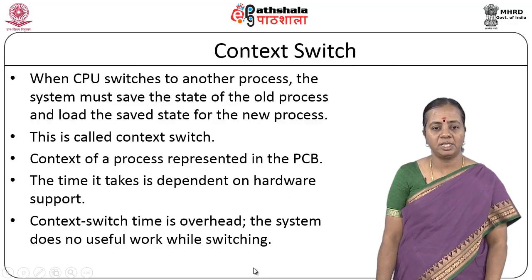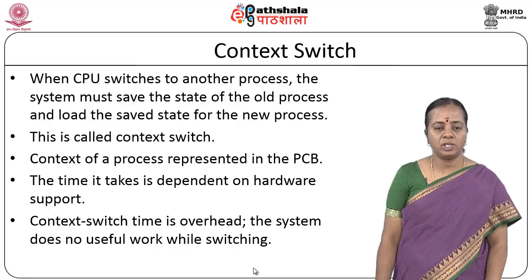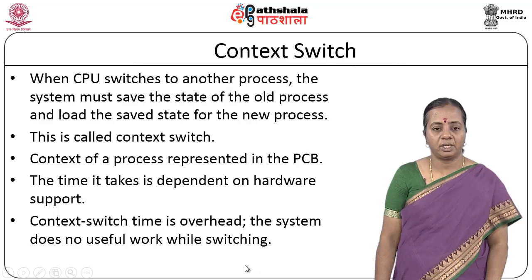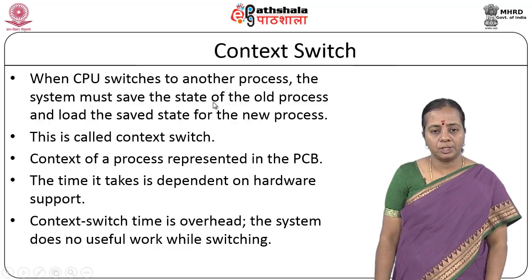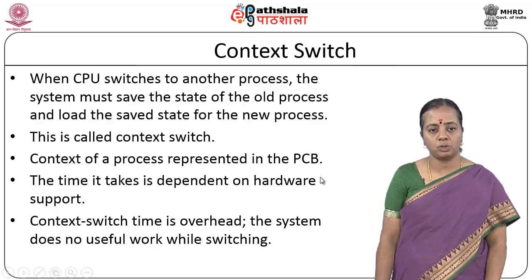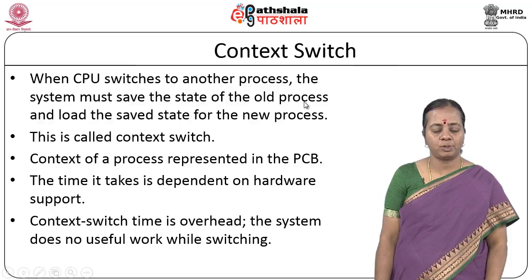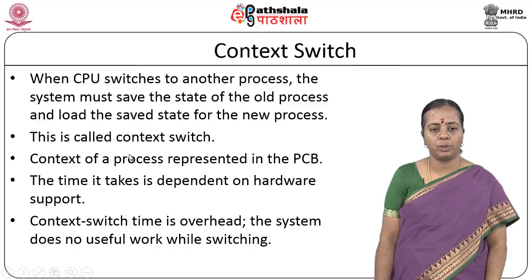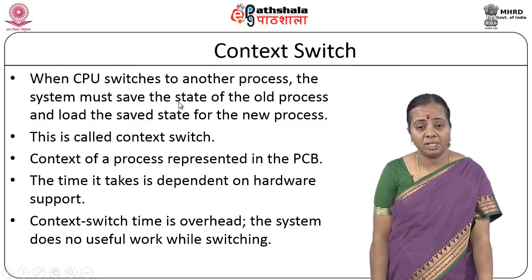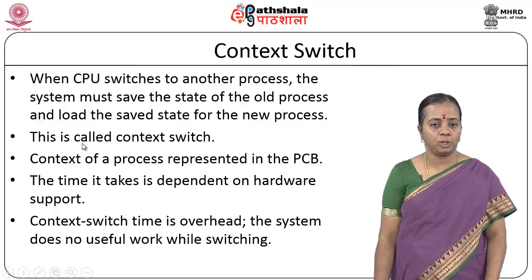When looking at context switching, when the CPU switches to another process, the system must save the state of the old process and load the saved state for the new process. When the scheduler switches from one process to the next, the current process state has to be saved somewhere. Context switching means saving the state of the old process as well as loading the state of the new process — this process is called a context switch.